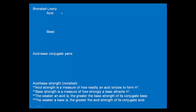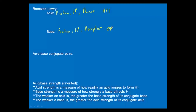Another way to describe acids and bases — a bit more general — is the Bronsted-Lowry definition: an acid is a proton donor (or hydrogen ion or hydronium ion donor), and a base is a proton acceptor. We say proton because H⁺ is a hydrogen without its electron, so the only thing left is the proton. A common example of an acid is hydrochloric acid; a common base is hydroxide, such as sodium hydroxide or lithium hydroxide.